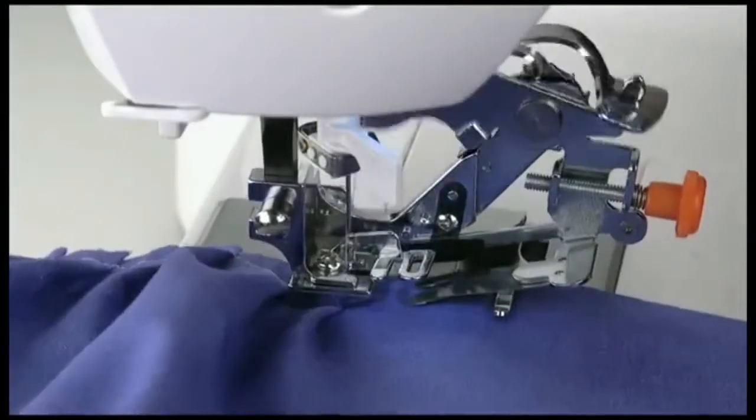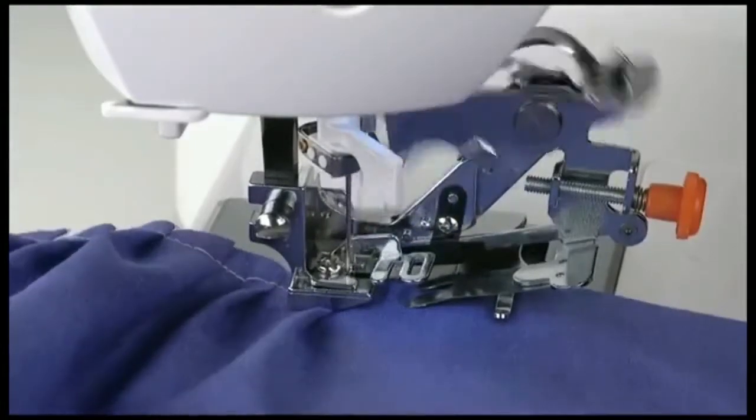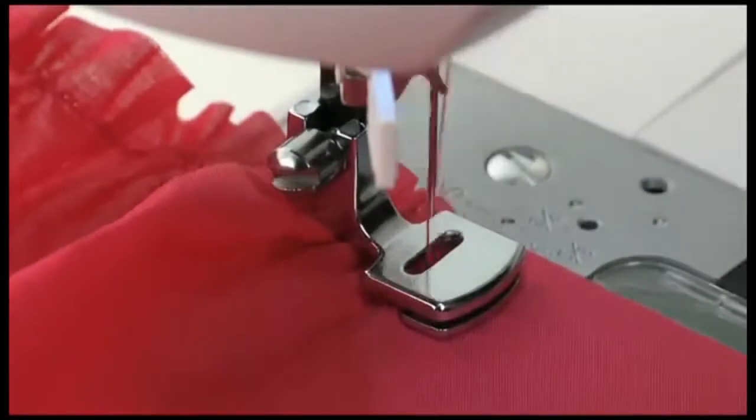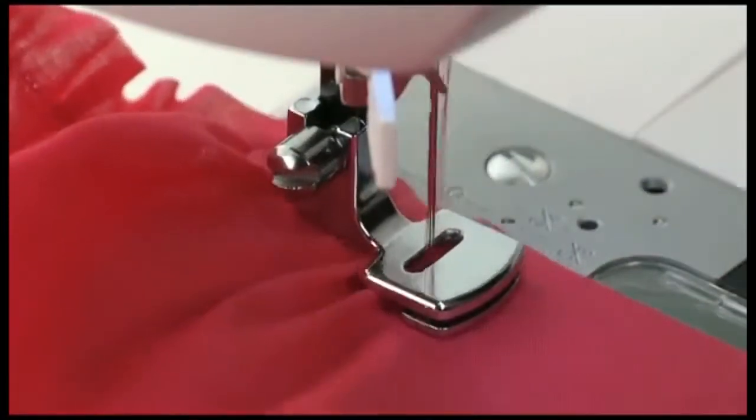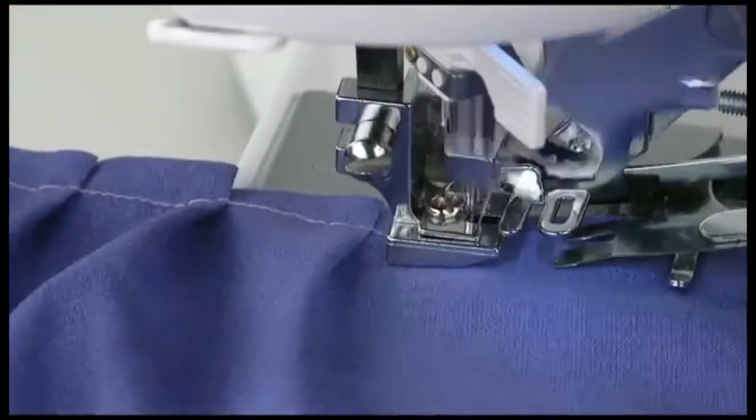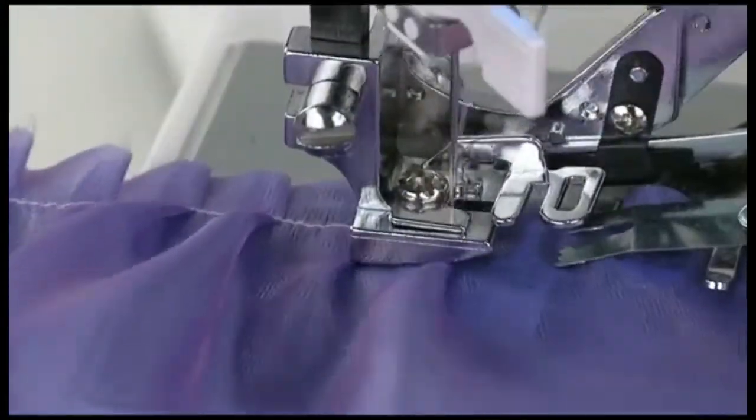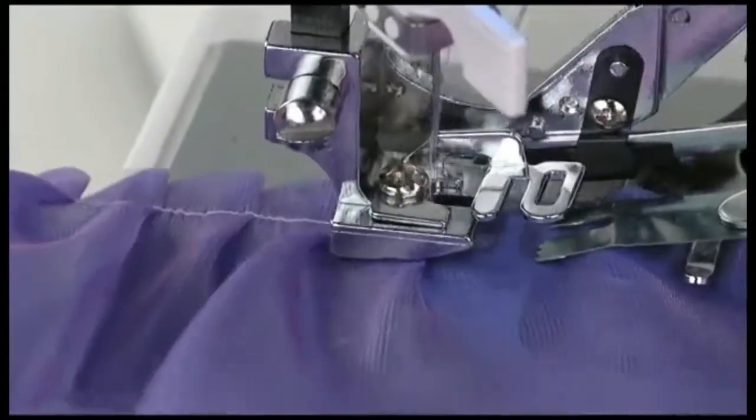The ruffler attachment is used to create perfectly spaced pleats and gathers. Where a gathering foot is simply designed to create fullness in soft, lightweight fabrics, the ruffler makes uniform pleats at set intervals. It can be used for lightweight as well as medium weight fabrics.